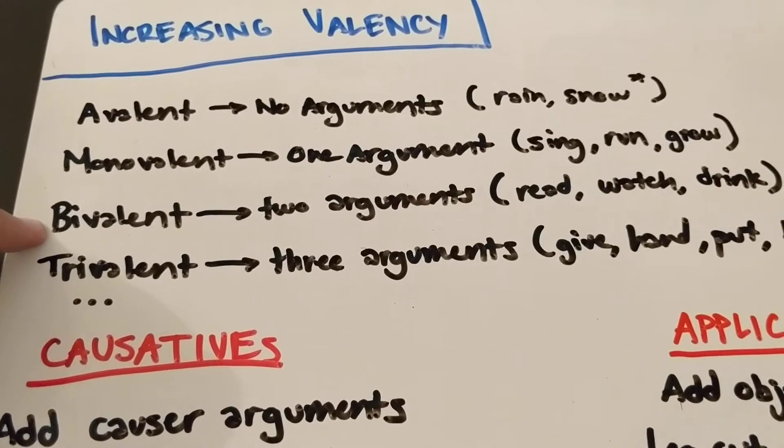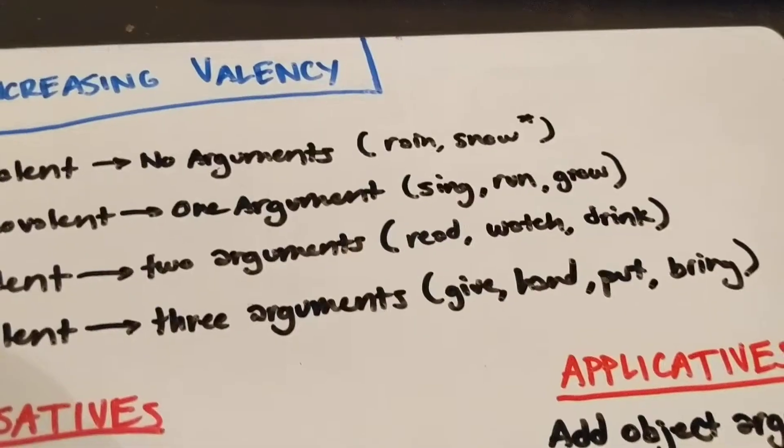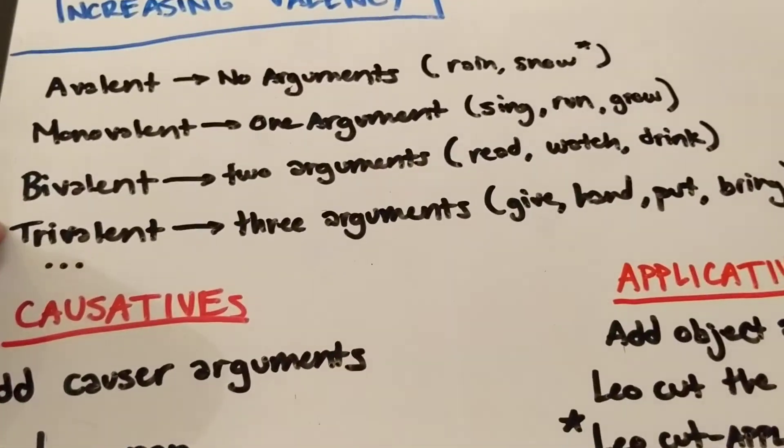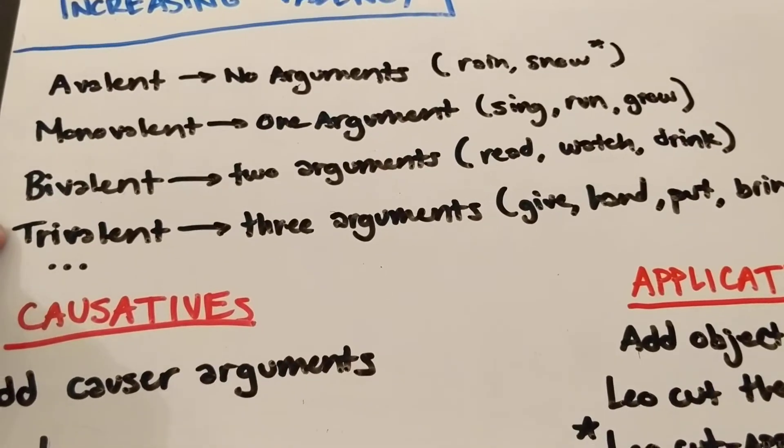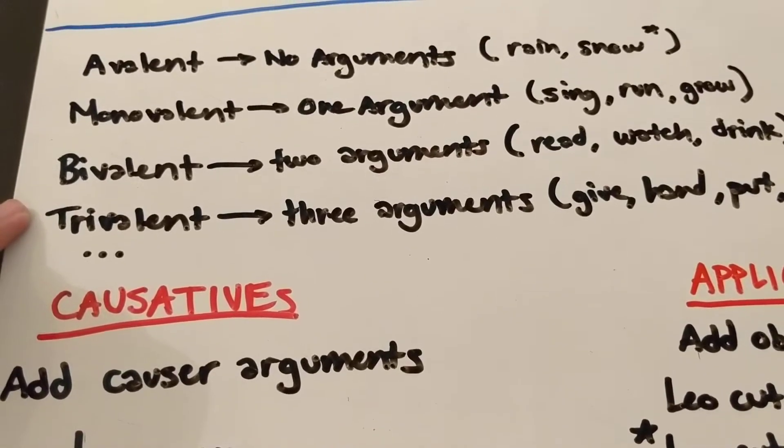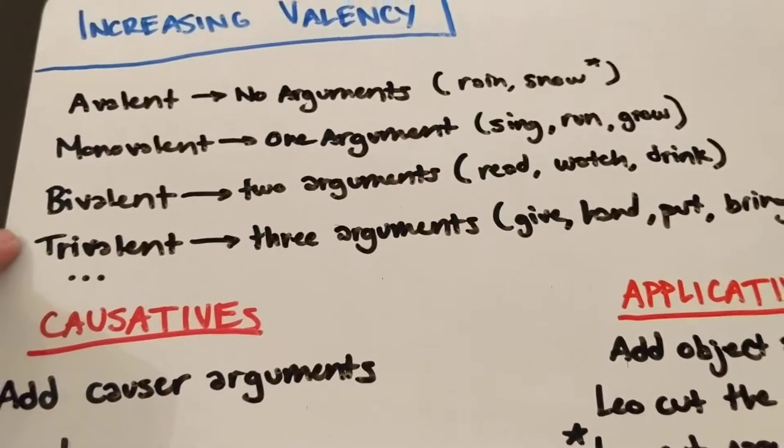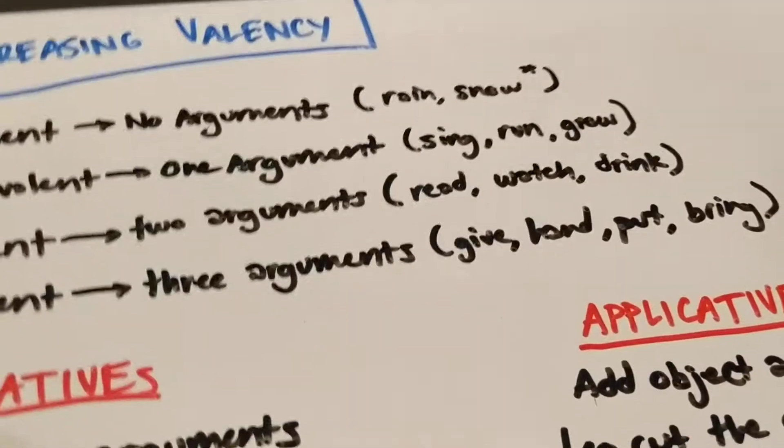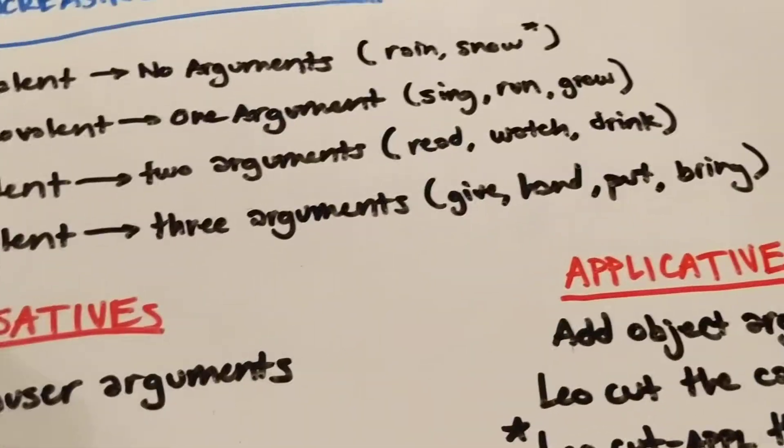Bivalent verbs are also known as transitive verbs. They take two arguments: read, watch, drink. And trivalent verbs are also known as ditransitive verbs. That's a little confusing because we're switching between Greek and Latin prefixes. But it means a trivalent verb has three arguments.